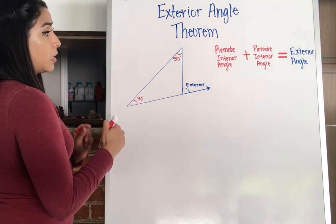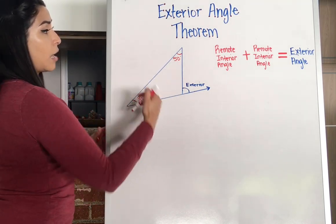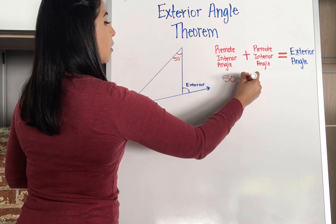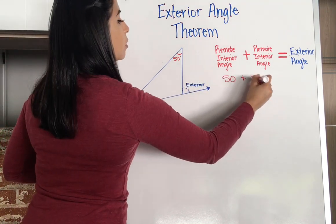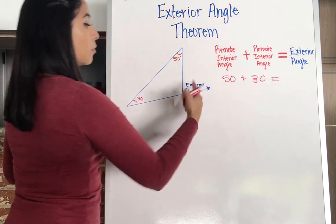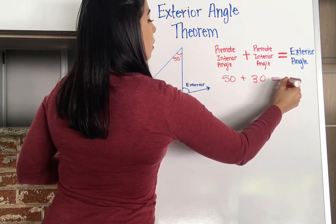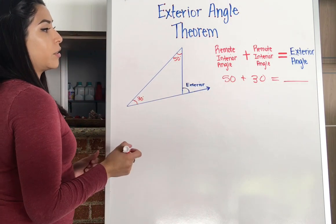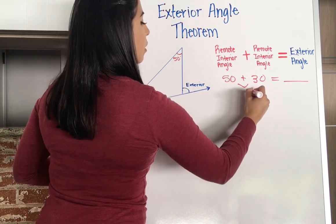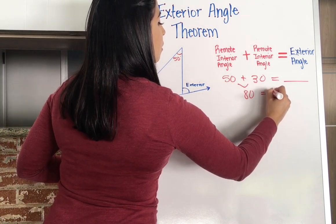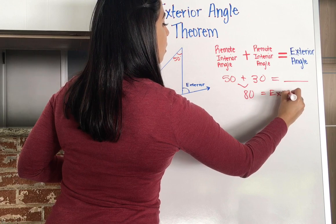Well, I could solve for it. It says the exterior angle so that I could add those up. So 50 plus 30 will equal my exterior angle. Right? I could solve for that exterior angle there. So when I add those up, I get 80 equals my exterior angle.